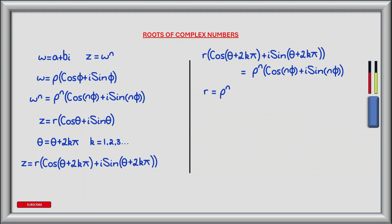Taking the nth root of both sides of this equation, we get r to the power of 1 over n is equal to rho. Also by looking at the equation we can see that n phi is equal to theta plus 2k pi. Solving for phi, we get phi equals theta plus 2k pi, all divided by n. Now let's substitute these values of rho and phi back into our expression for complex number w.